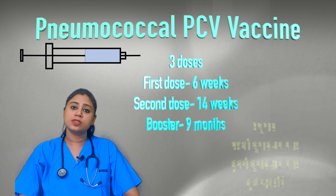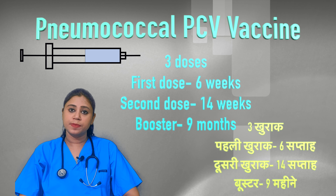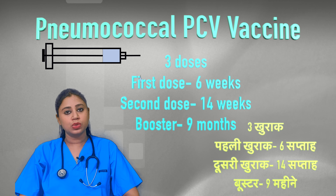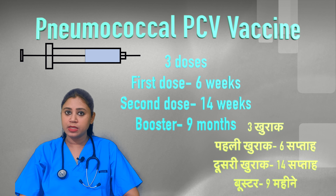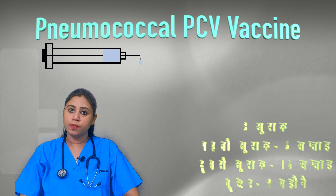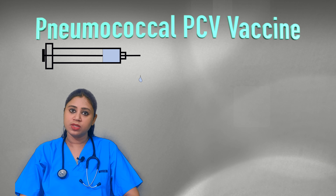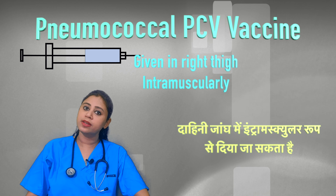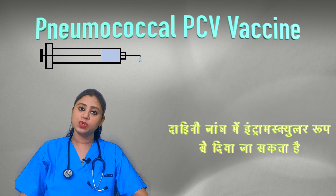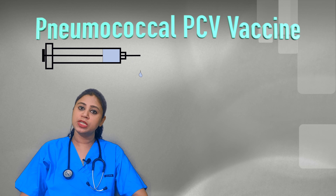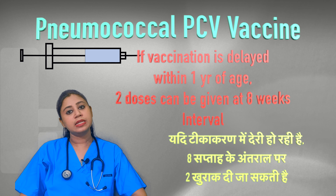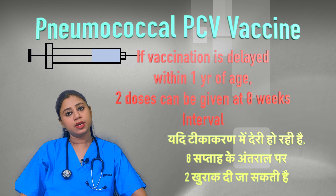The PCV vaccine is given in 3 doses. The first dose is given at 6 weeks of age, the second dose at 14 weeks, and the third booster dose at 9 months. It is important to give the vaccine at the right time. If the vaccine is delayed, it can still be given within the first year.